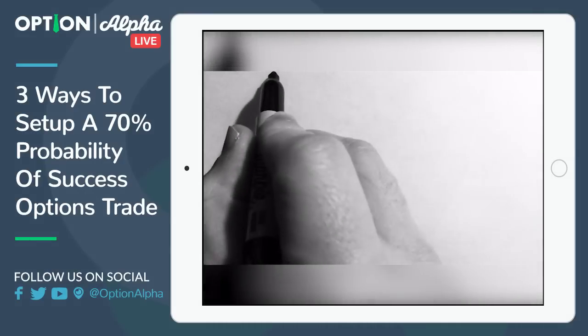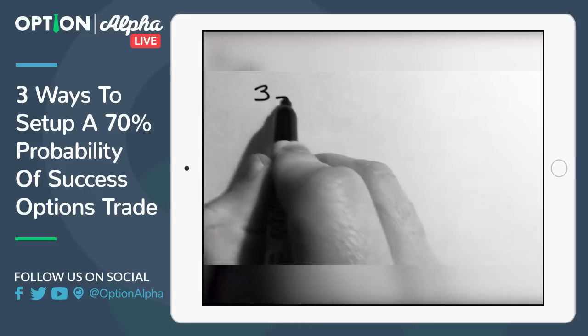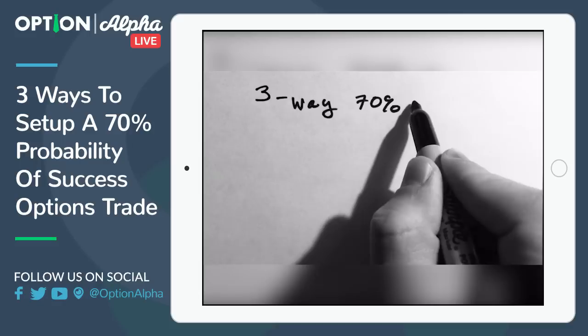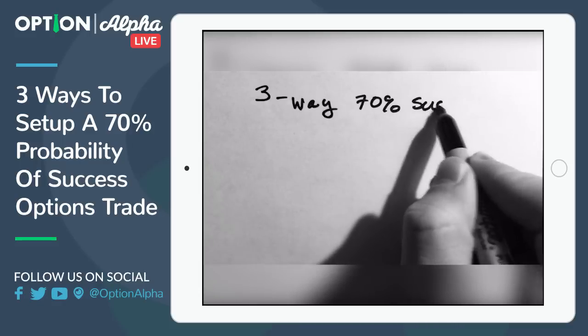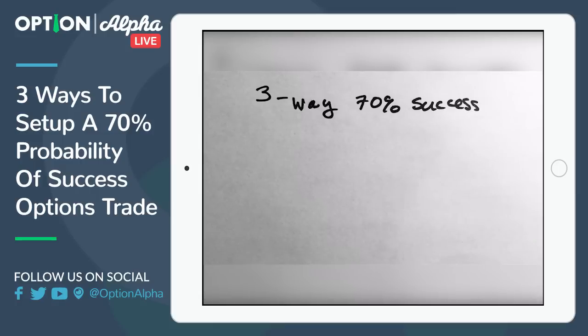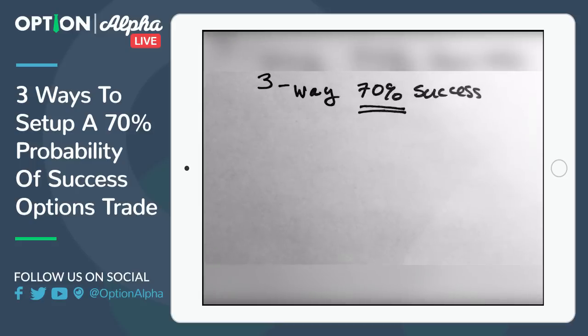Hey, what's up everyone and this is Kirk here again at Option Alpha and tonight we're going to talk about three ways that you can build a 70% probability of success trade. The whole idea here is that we're trying to build trades that have directional assumptions in any three directions, meaning bullish, bearish or neutral, but also have a really high probability of success. This is actually a lot easier to do than people think. People overcomplicate this all the time. So here's how you basically do it.